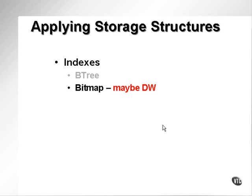Bitmap indexes are most likely used in data warehouses. I have heard both good and bad reports about bitmaps even in data warehouses — it's possible that bitmaps have been misused. I wouldn't recommend using bitmaps in an OLTP database unless you can actually rebuild the bitmap indexes on occasion. As I already stated in the previous video, a bitmap is subject to a lot more overflow than a B-tree index, simply because of its external structure and the way in which it's built.